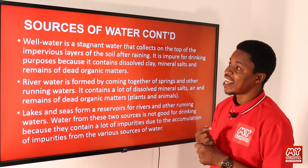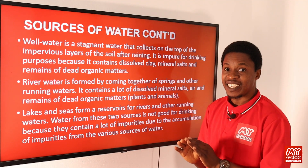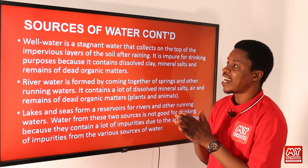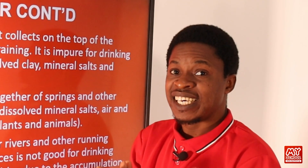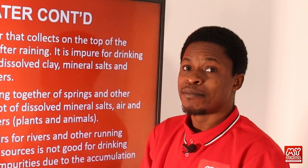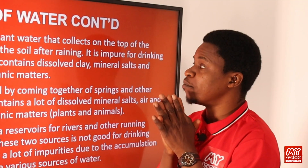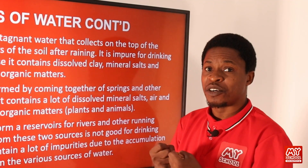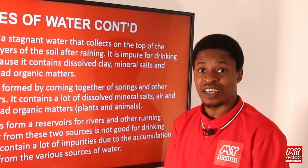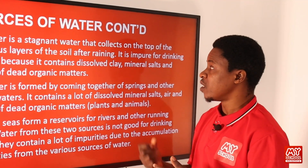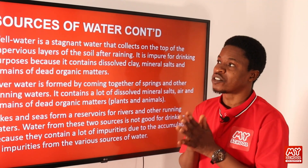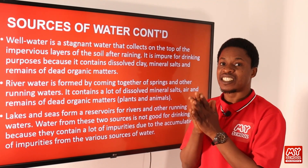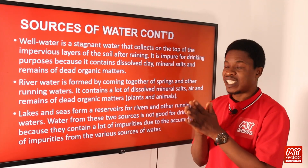Well water is another source of water — it is stagnant water that collects on top of impervious soil layers after rain has fallen. Because it is stagnant, microorganisms can grow, germinate, reproduce, and multiply in it. Apart from microorganisms, clay, dissolved mineral salts, and dead organic matter can also be present, so well water is not a good source of drinking water.